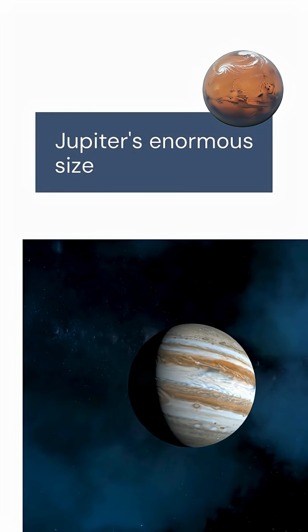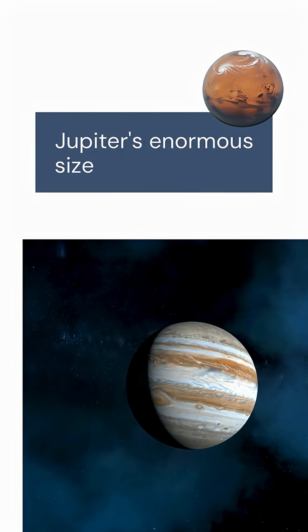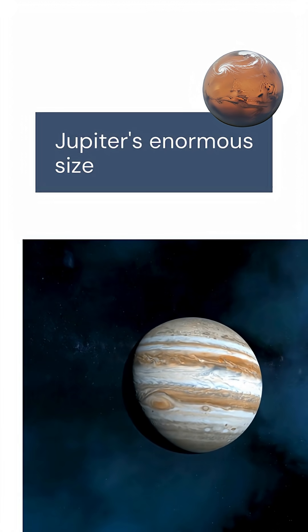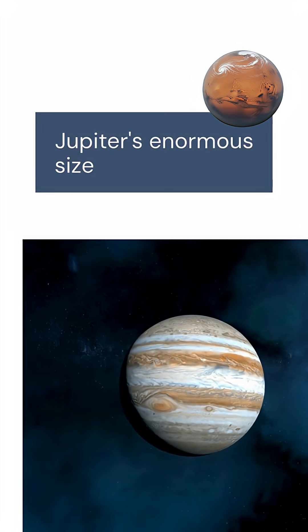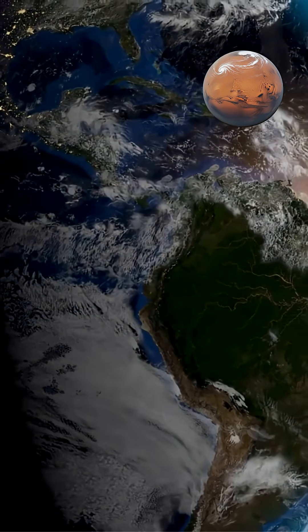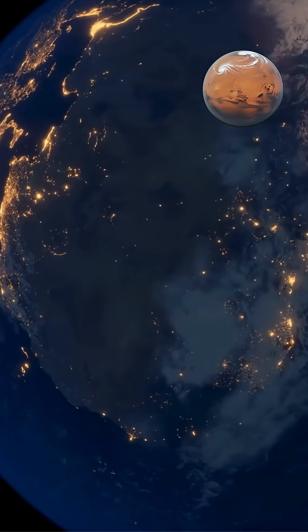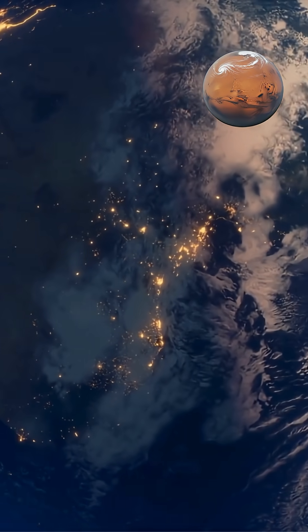Jupiter's enormous size, over 11 times Earth's diameter and containing more mass than all other planets combined, profoundly affects its internal structure, atmospheric dynamics, magnetic field strength, and gravitational influence throughout the solar system.